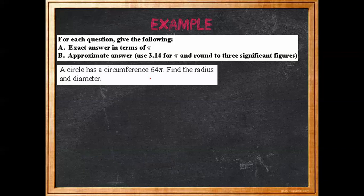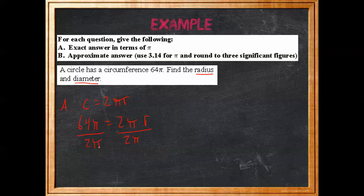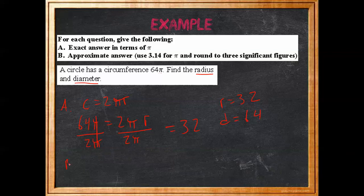A circle has circumference 64π. Find the radius and diameter. Using C equals 2πr: 64π equals 2πr. Dividing both sides by 2π, the pi's cancel, and 64 divided by 2 gives us r equals 32. The diameter is therefore 64. Since pi cancelled out, the exact and approximate answers are the same: r equals 32, d equals 64.